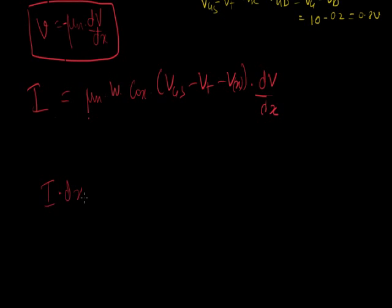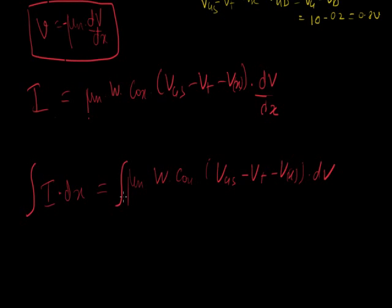It becomes idx equals mu N W Cox VGS minus VT minus VX times dV. Always in physics, maths, or any sciences, whenever you have a dx or a dV and you're trying to look for an equation, you want to get rid of those dx and dVs. So what do you do? You integrate on both sides.